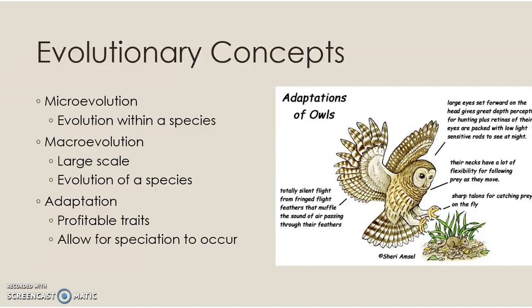Those are the two types of evolution: small, within a species, and big, a new species. A lot of the time this happens through adaptations, because adaptations are really important for natural selection — these are profitable traits that allow for speciation. Remember, there are still things like gene flow and genetic drift that are not natural selection but are evolutionary mechanisms.